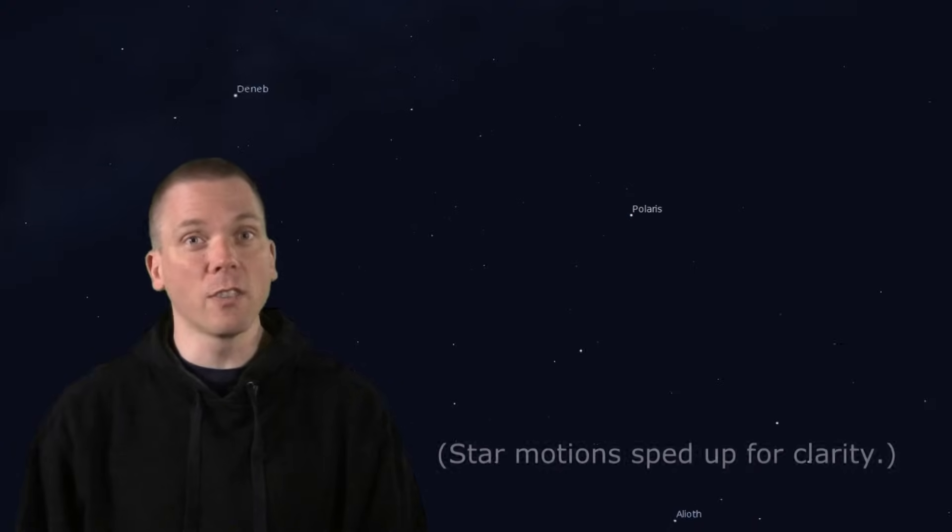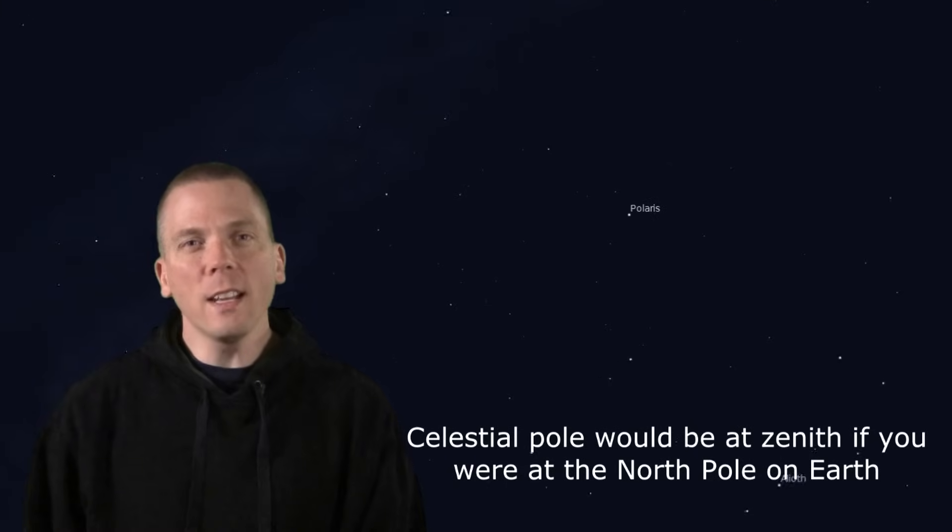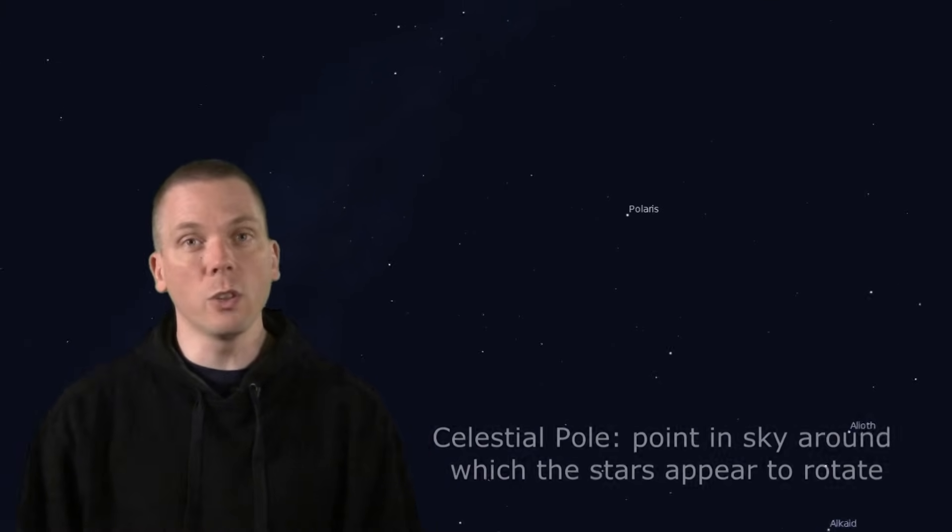So as Earth spins, imagine if you were standing at the north pole, and looked straight overhead when it was dark. The stars would appear to spin around a circle, and the axis of that circle at the zenith, the point overhead we talked about earlier. That point in the sky around which the stars rotate is the celestial pole.